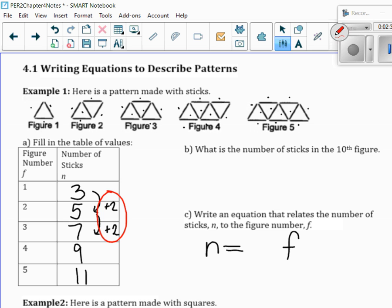So, for example, if it's going up by 2, try multiplying the figure number by 2. Well, if I take figure number 1 and multiply by 2, I get 2. But the number of sticks is 3. So, how do I get 3? Well, you might say, oh, I add 1. Okay, so I'm going to put the 2 down and guess that I'm adding 1 and see if it works for the next couple.